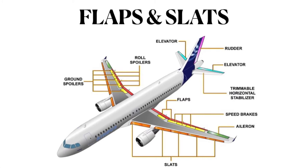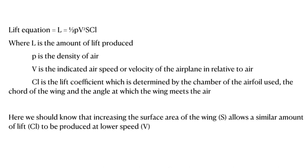Next let us look at the lift equation. Here L is the amount of lift being produced, p is the density of the air, v is the indicated airspeed relative to air, and CL is the lift coefficient, determined by the camber of the airfoil, the chord of the wing, and the angle at which the wing meets the air. Increasing the surface area of the wing increases lift and also allows more lift to be produced at lower speeds.